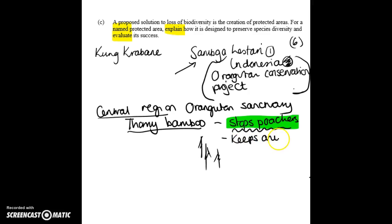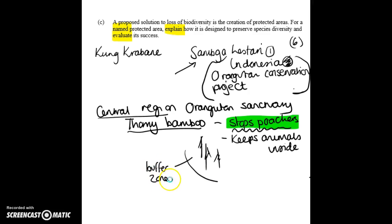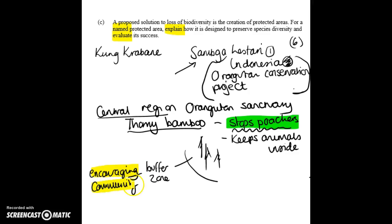The thorny bamboo also stops the animals from leaving, keeping them in for their own safety. Around the outside you have the buffer zone, which is really good for encouraging community participation. Farming activities happen here — the sugar palm grows here — so the buffer zone allows human activities to take place and helps engage the community.